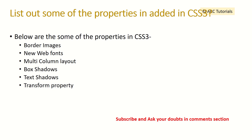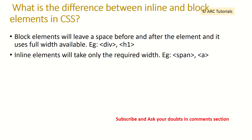List some of the properties added in CSS3. Some of the new properties added in CSS3 are border images, new web fonts, multi-column layout, box shadows, text shadows, and the transform property. Make sure you know this list very well — this is definitely going to be one of the questions asked in your interview.